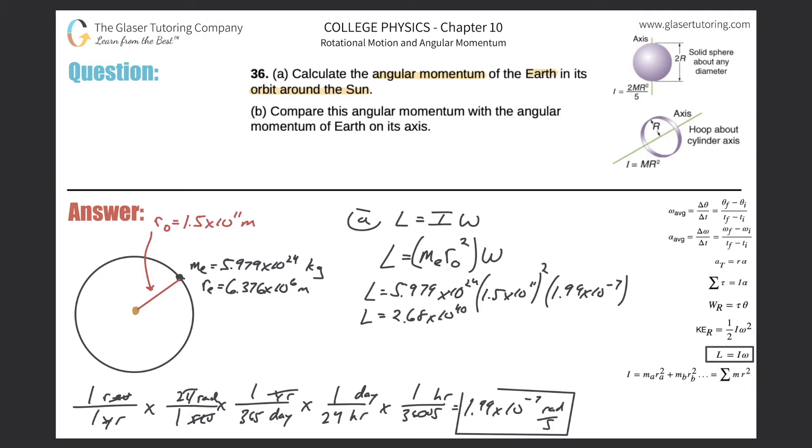You could have two sig figs there since I used two here. So that takes care of letter A. Now let's do letter B. I'm going to get rid of this conversion to give myself a little more space. It says compare this angular momentum with the angular momentum of Earth on its axis. So now for letter B, we have to calculate the angular momentum of Earth on its own axis.